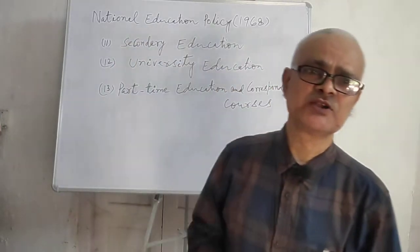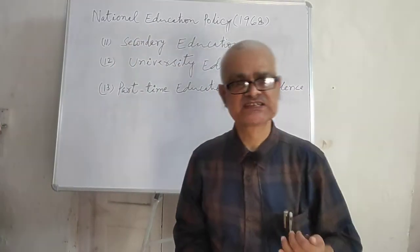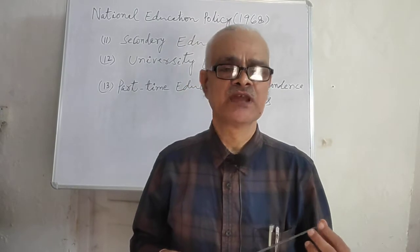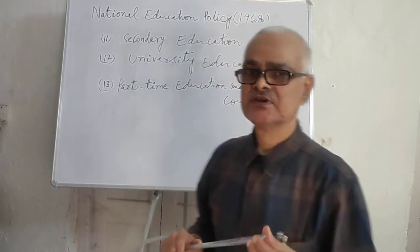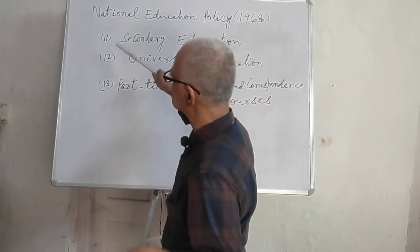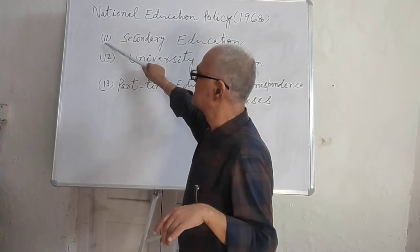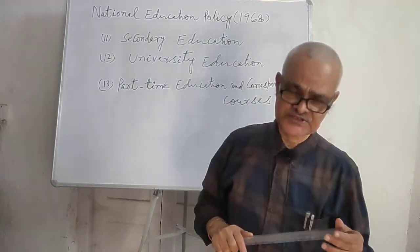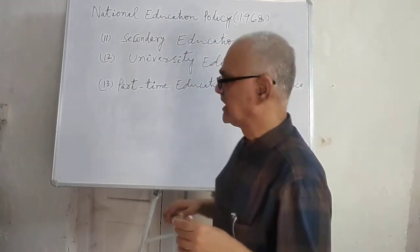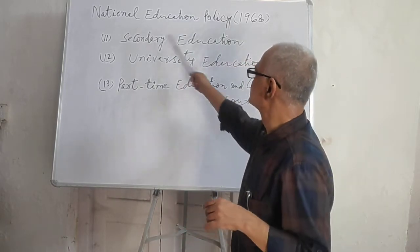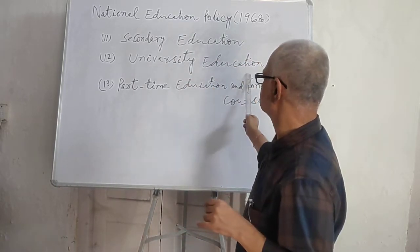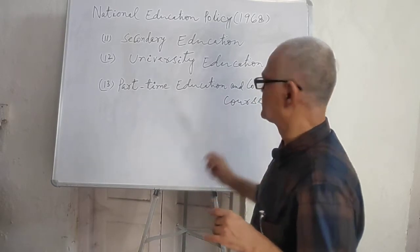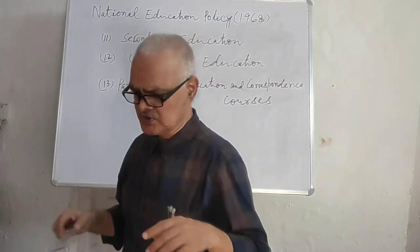In this part of the discussion on National Education Policy 1968, we shall discuss paragraphs 11, 12, and 13 of the policy. These are related to secondary education, university education, part-time education, and correspondence courses.